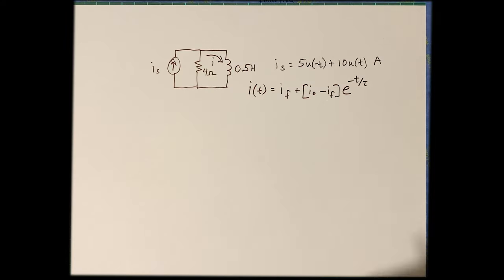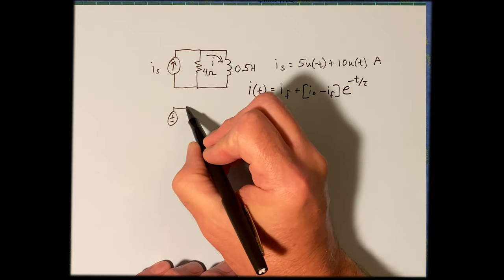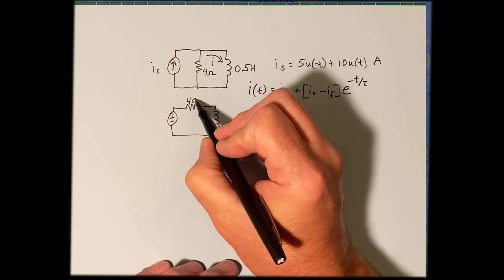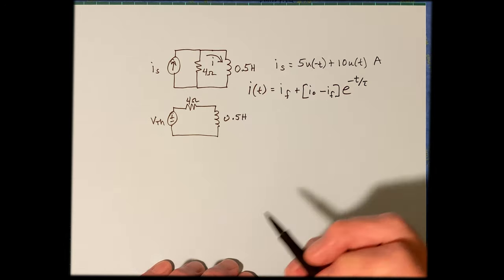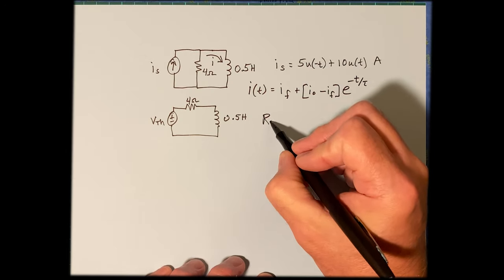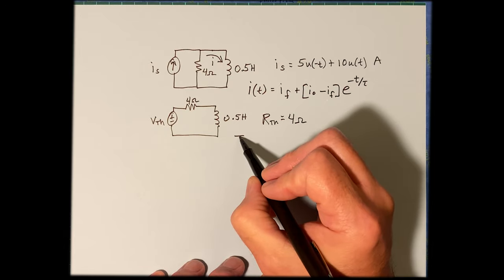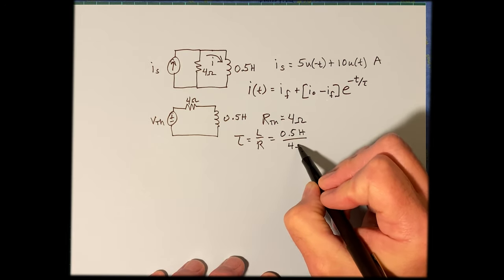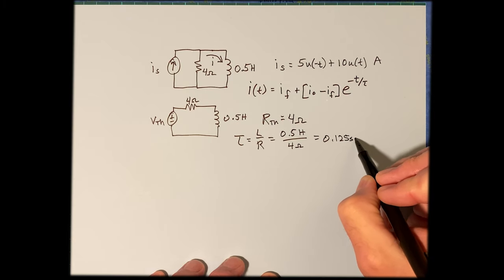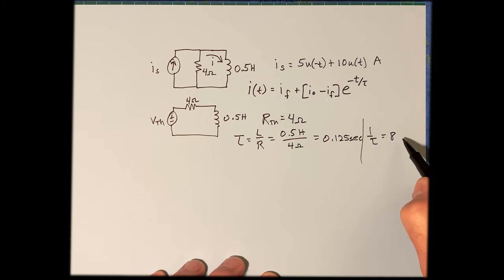Getting RTH and VTH is straightforward. The circuit simplifies to a 4-ohm Thevenin resistance, so RTH = 4 Ω. Tau equals L/R = 0.5 H / 4 Ω = 0.125 seconds, and 1/tau = 8.